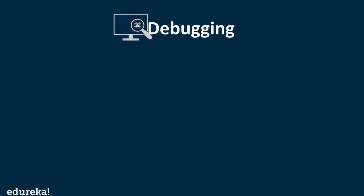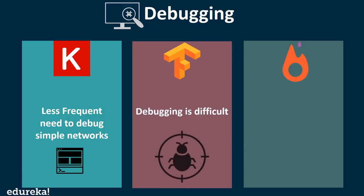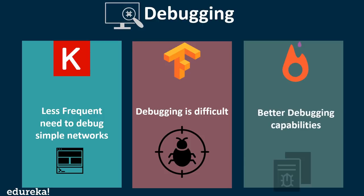The next parameter is debugging. In Keras there is usually very little frequent need to debug simple networks, and it offers a more direct, uncomplicated debugging experience regardless of model complexity. In TensorFlow it is quite difficult to perform debugging. PyTorch, on the other hand, has better debugging capabilities and fewer opportunities to go wrong, but once something does go wrong it is difficult to pin down the exact line that causes the trouble.